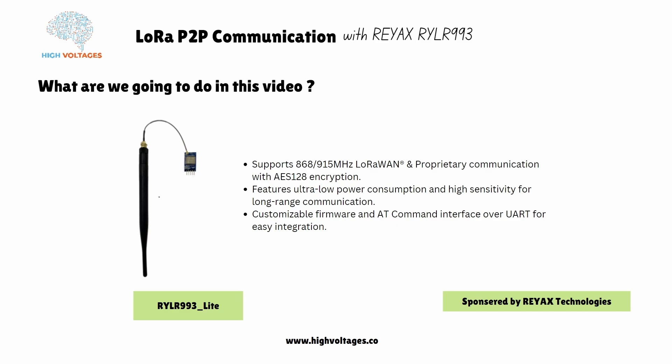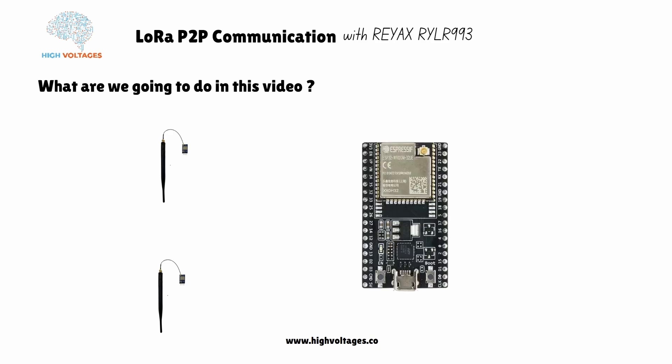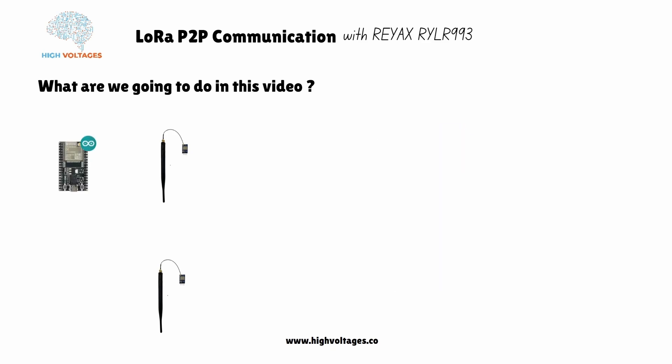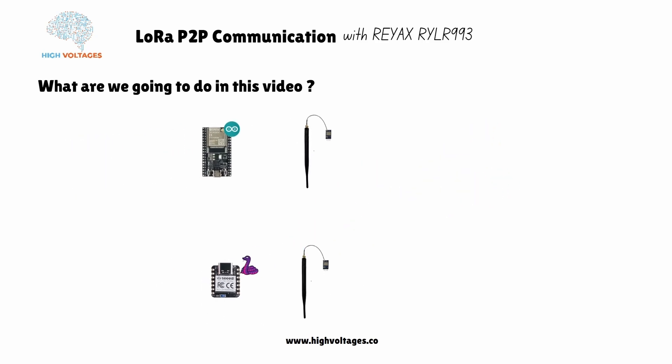We will use two RYLR993 modules. The first module will be connected to the ESP32 and we will use Arduino IDE to program it. The second module will be connected to the Seeed nRF52840 and we will use CircuitPython. These two boards will communicate using the LoRa modules — this will be our P2P communication.